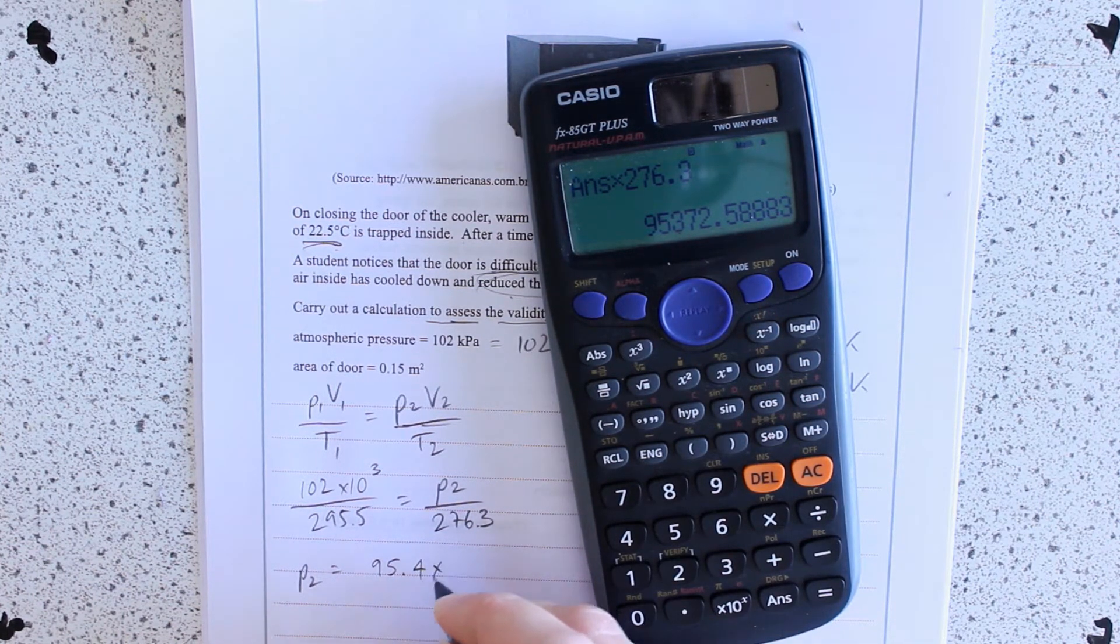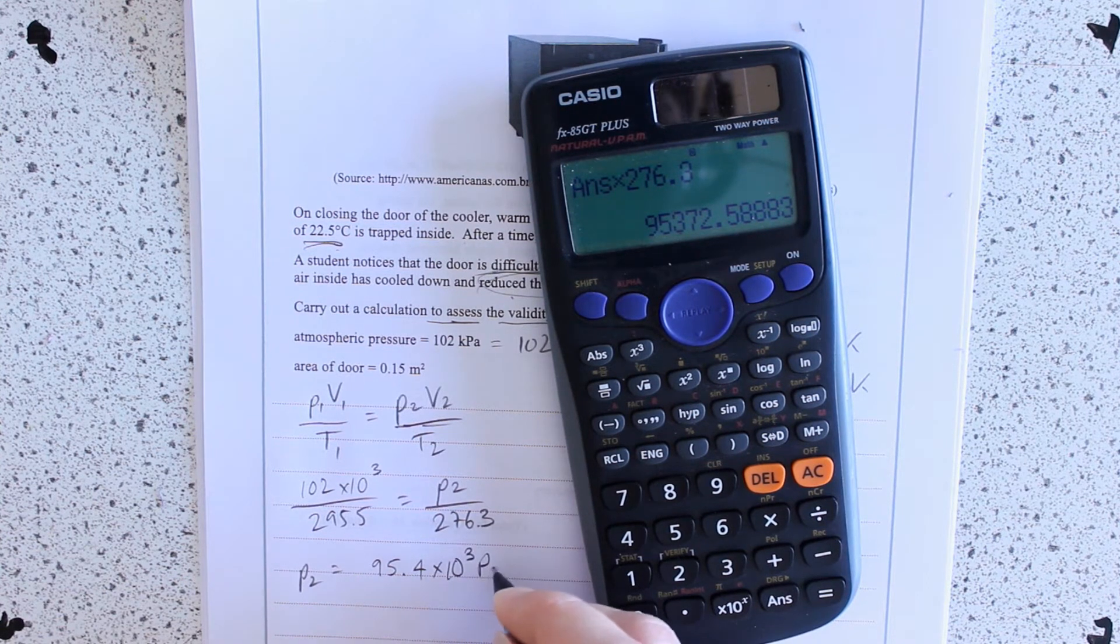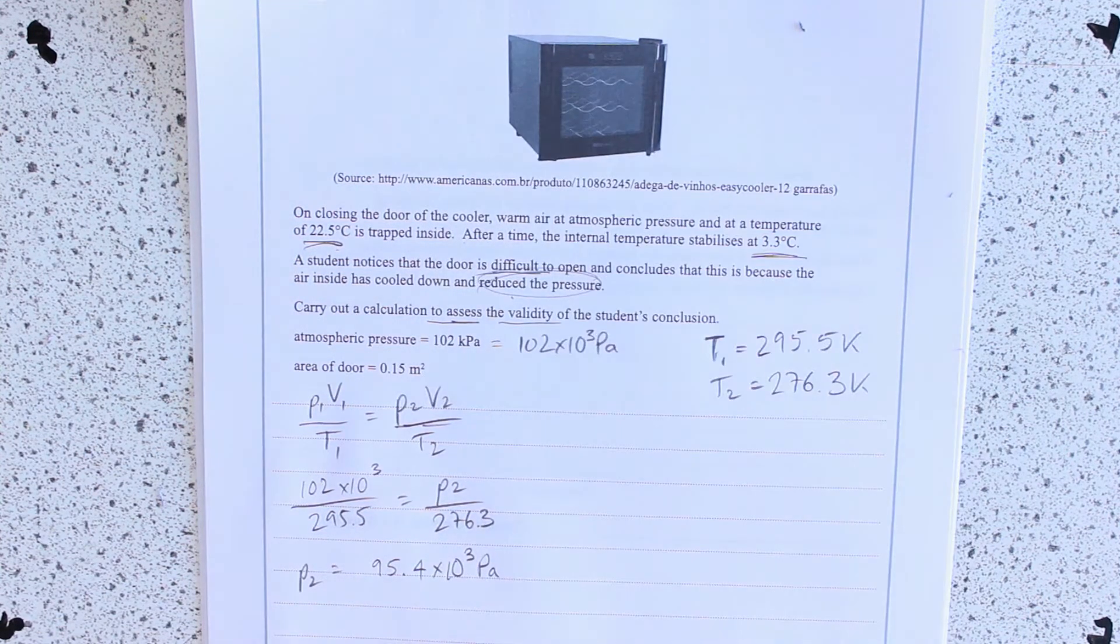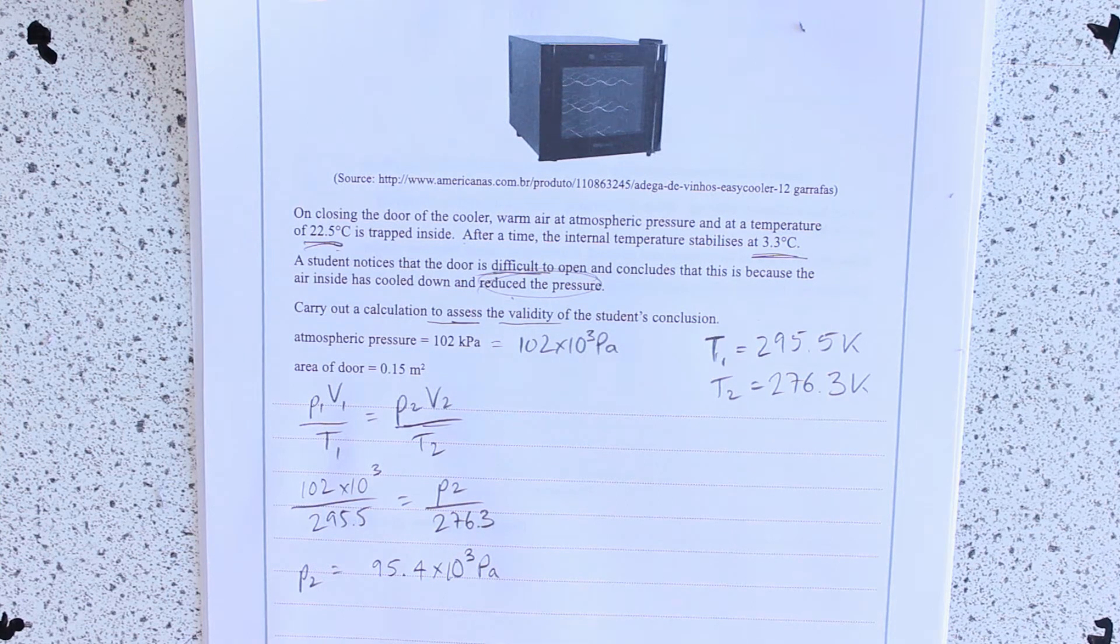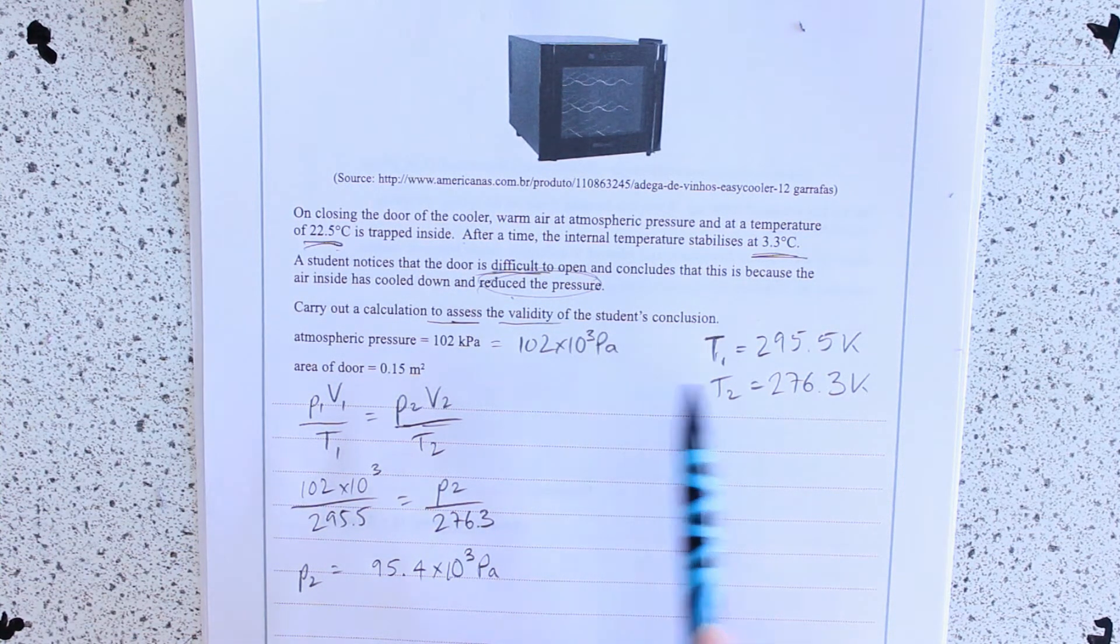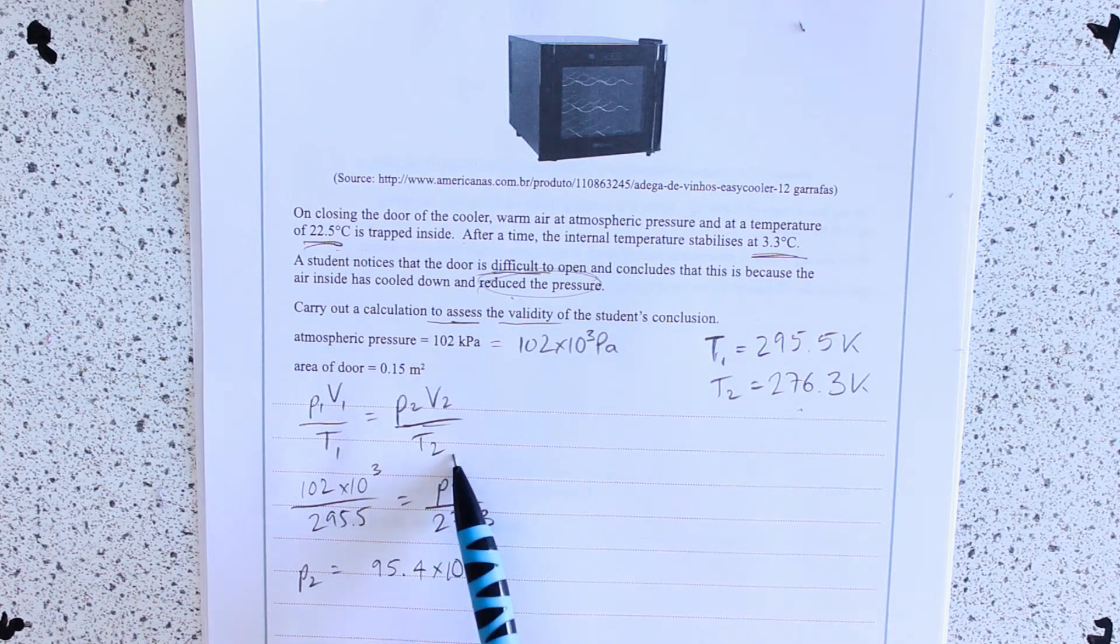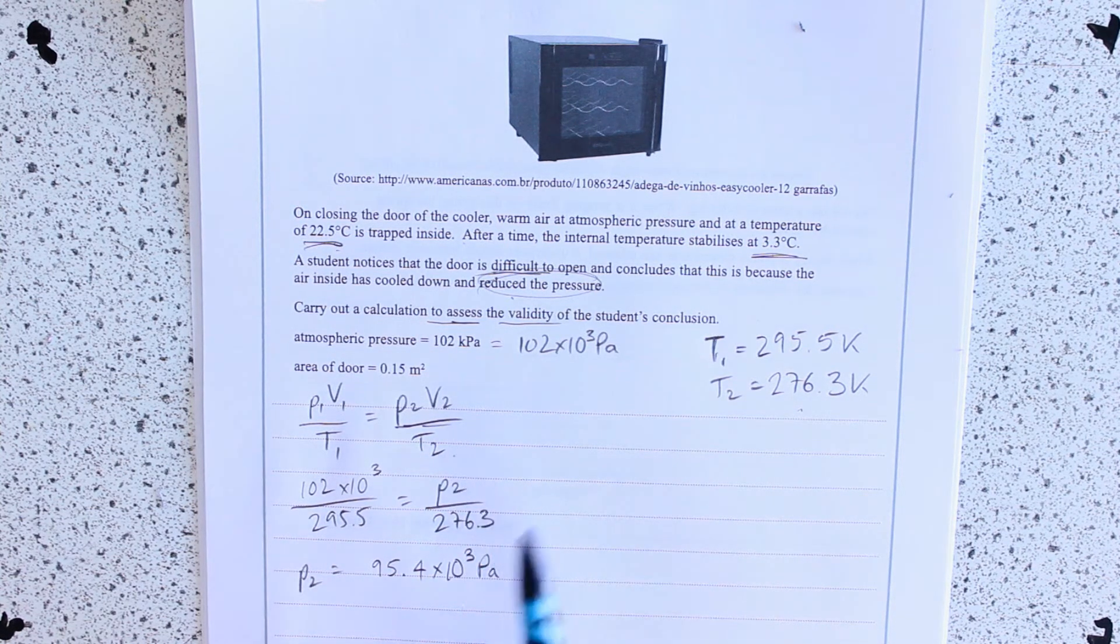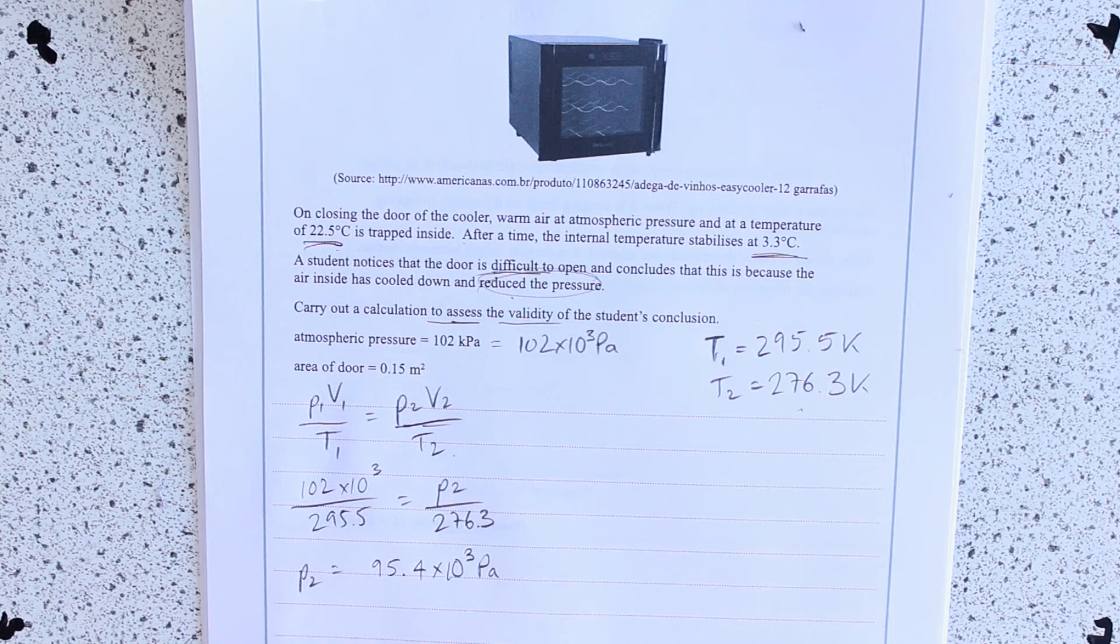95.4 times 10 to the 3 Pascals. Now, I've probably picked myself up some marks there so far. I've got conversion to Kelvin. I've got use of ideal gas law. I've got pressure. I've actually got three marks so far.